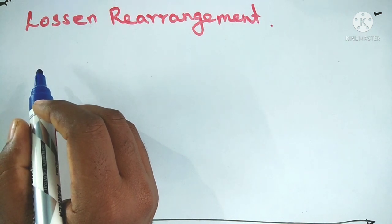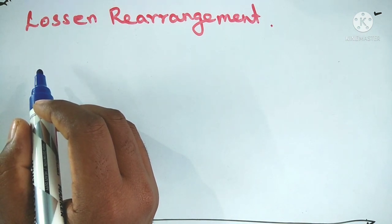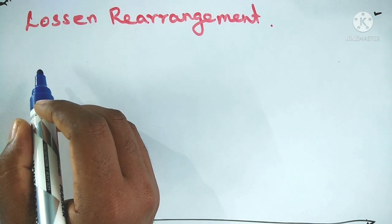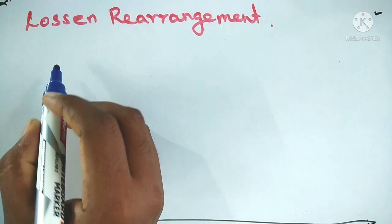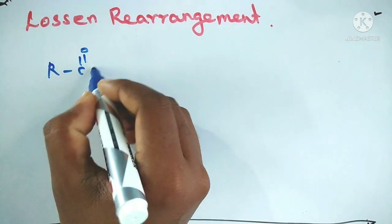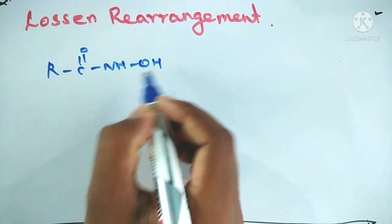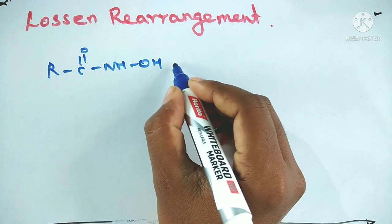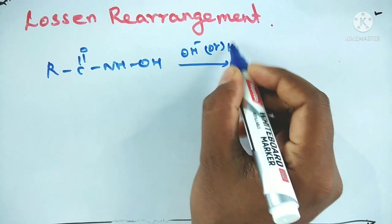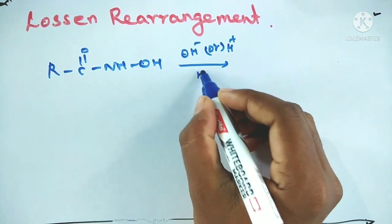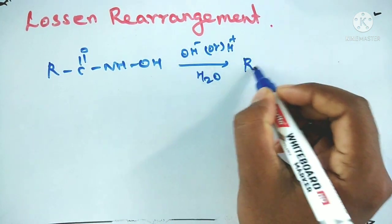Hello all, welcome to my YouTube channel PK Chemistry. In the previous lecture we discussed Hoffmann rearrangement, Curtius rearrangement, and Schmidt rearrangement. In this lecture we are going to discuss the Lossen rearrangement — it's a conversion of hydroxamic acid (R-C(=O)-NH-OH) into an amine in the presence of acid or base followed by hydrolysis.